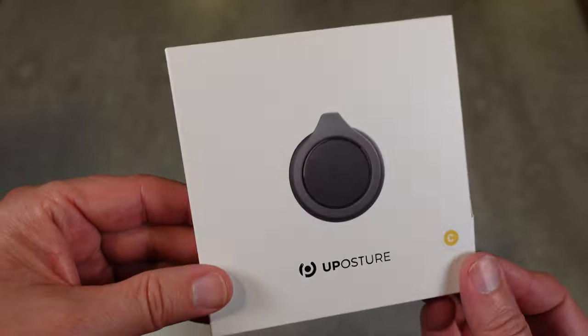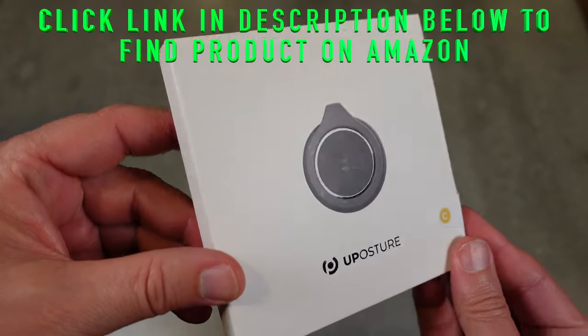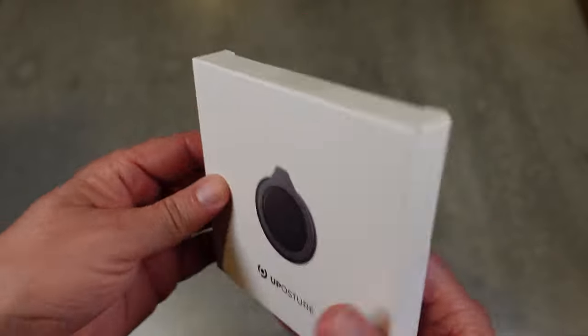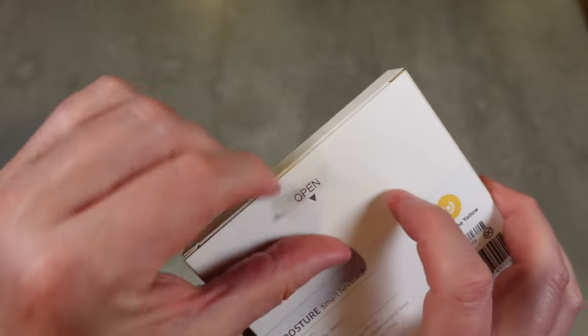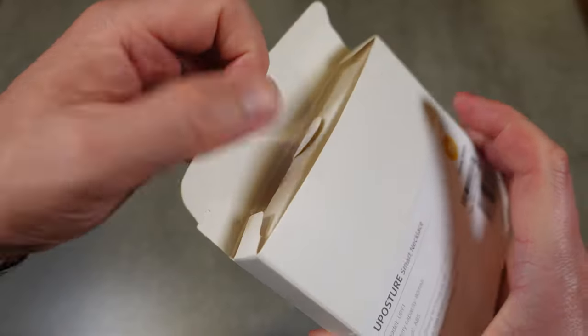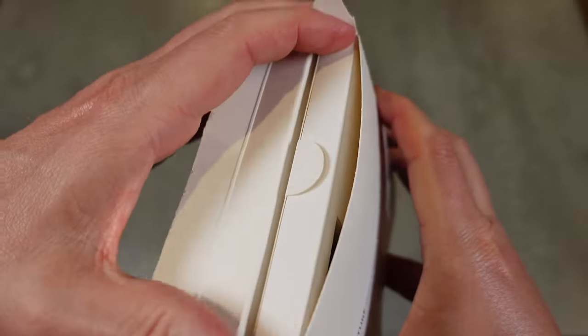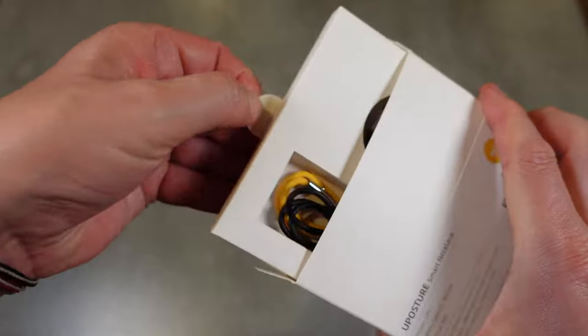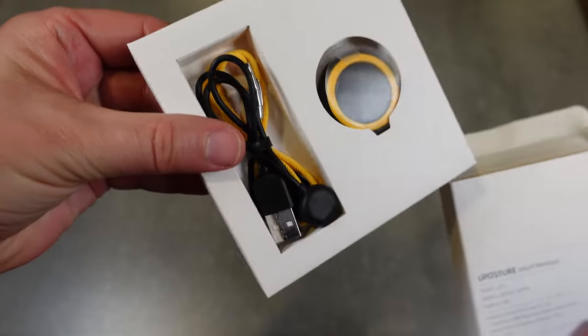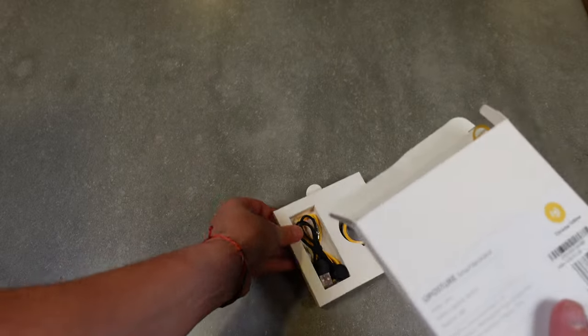Let's take a quick look at what comes in the box with the U Posture smart necklace. Nice simple elegant packaging here with a little open button. You pull that tab and we're gonna open up the box. There's a tab here to pull this out, and there you go. This is what comes in the box.